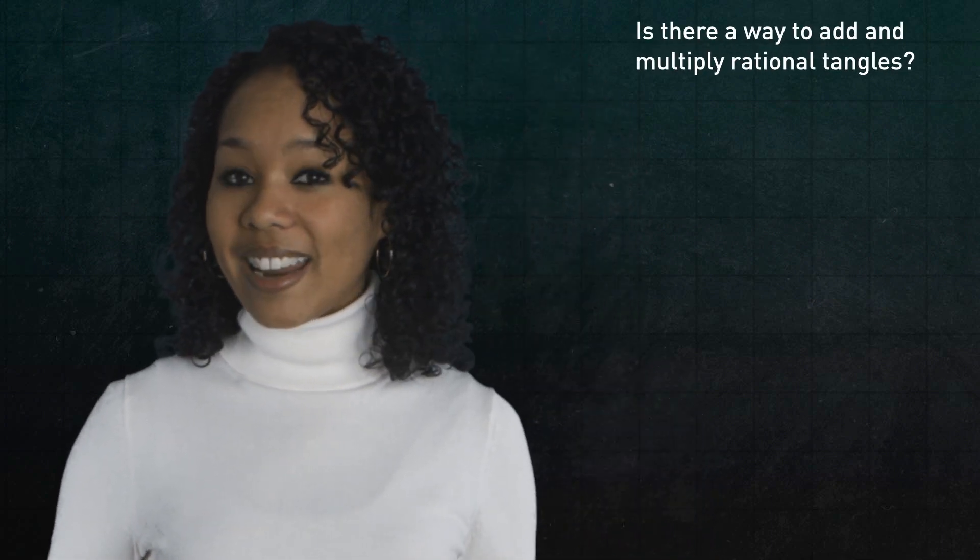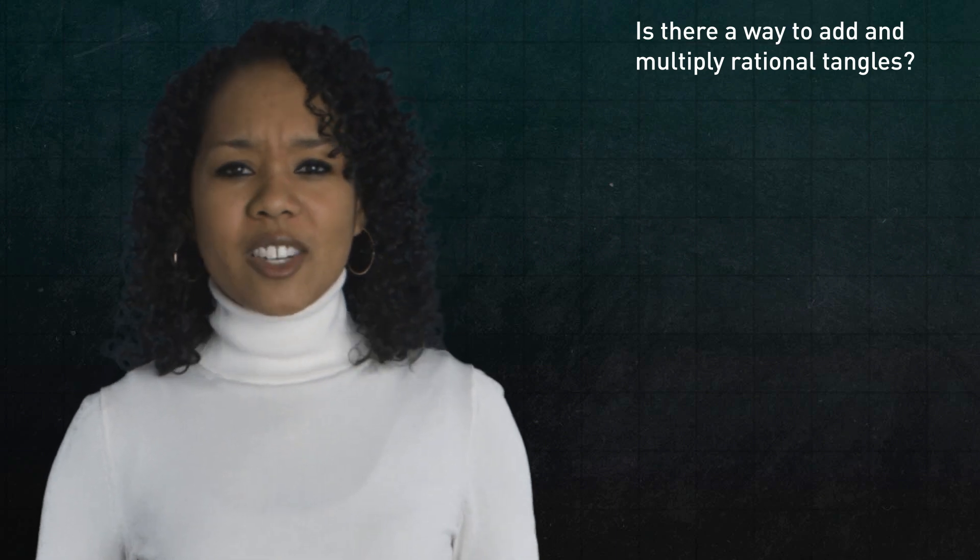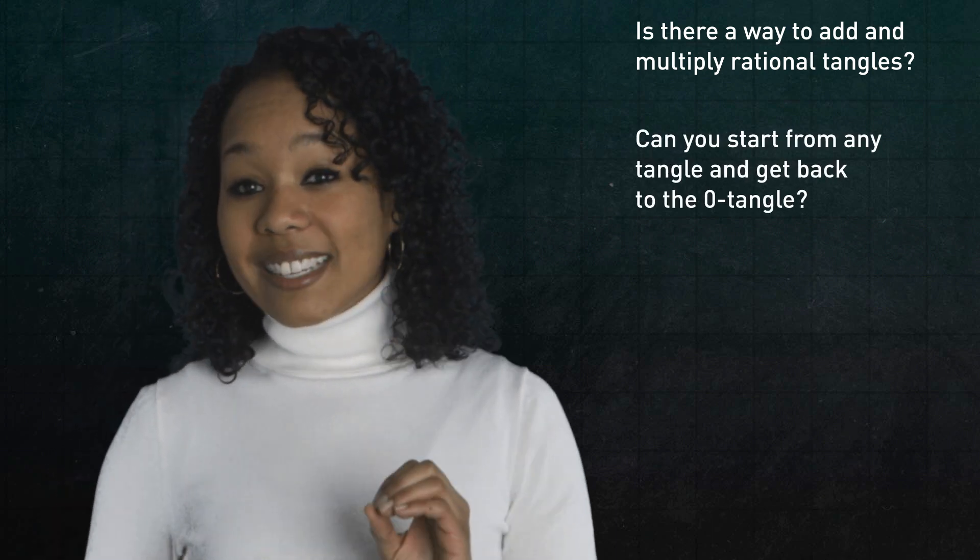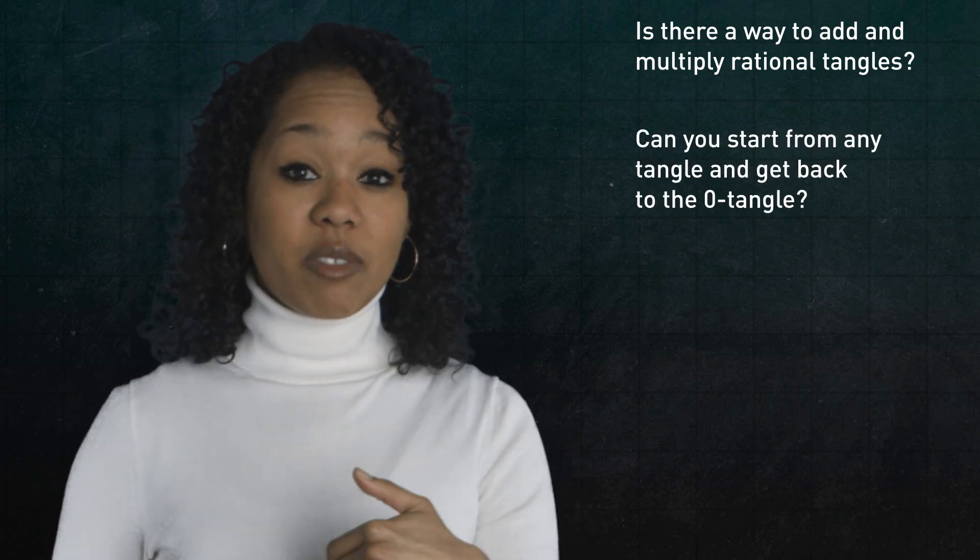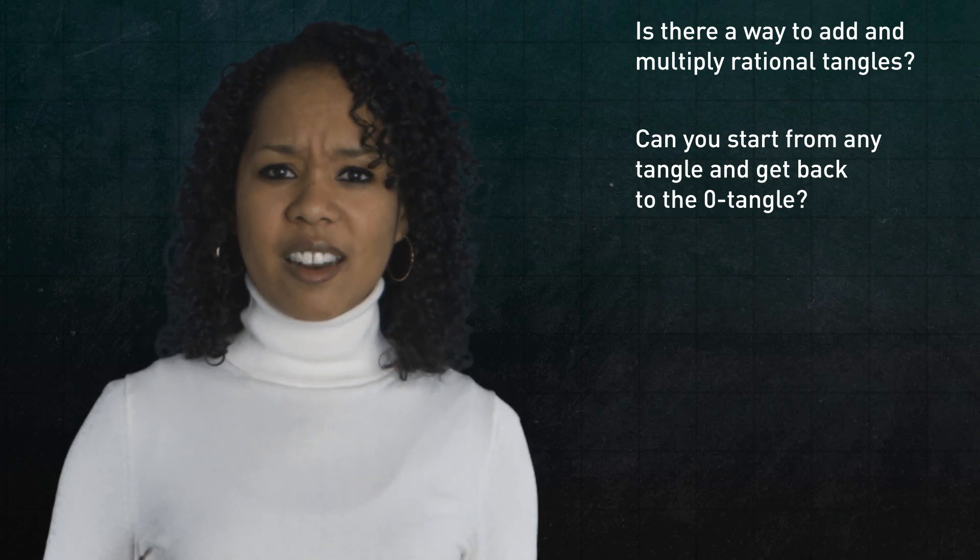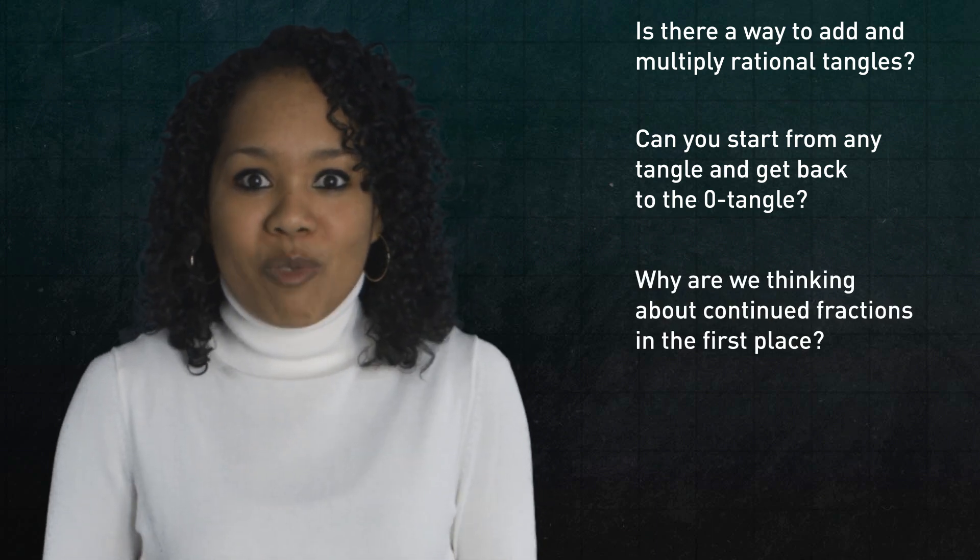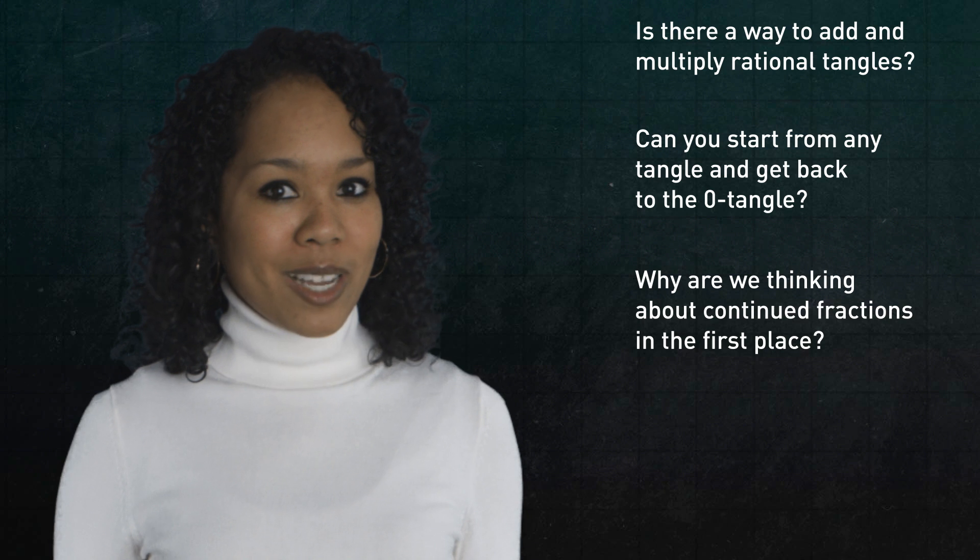All right, at this point, there are tons of questions that you can ask, like, hey, we can add and multiply rational numbers, so is there a way to add and multiply rational tangles? Another question, can you start from any tangle and get back to the zero tangle? Or conversely? And, oh, by the way, why are continued fractions the right thing to think about in the first place? There are lots of things to explore, we're not even scratching the surface. If you want to dig deeper, and I hope that you do, I put a ton of great links below.